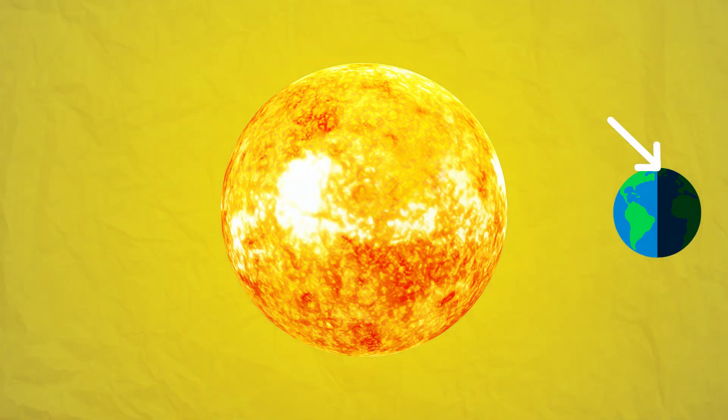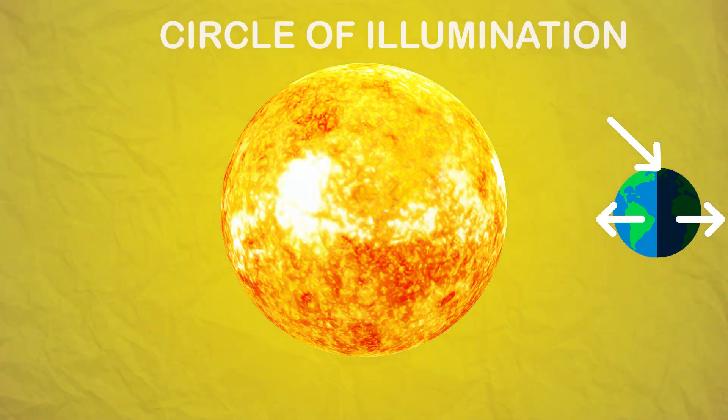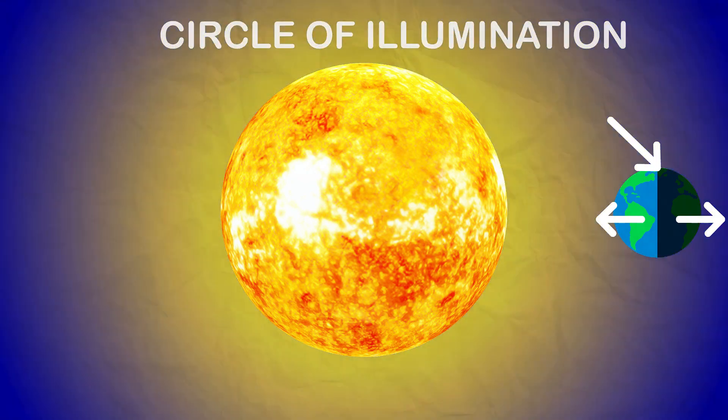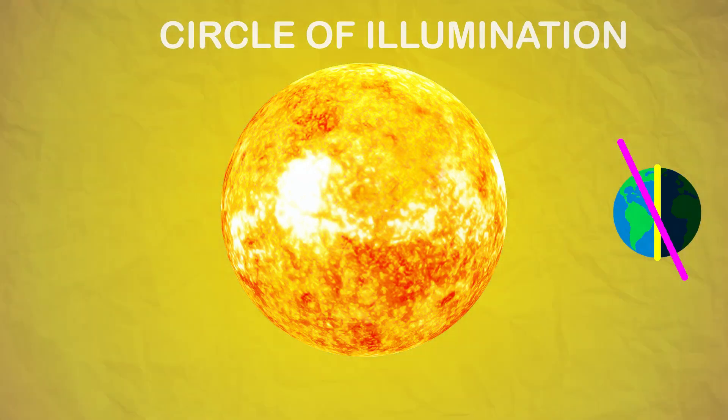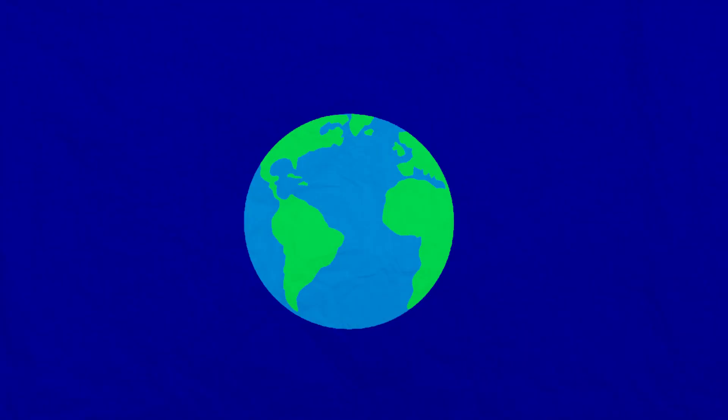The circle that divides the day from night on the globe is called the circle of illumination. This circle does not coincide with the axis, as you see in this figure.